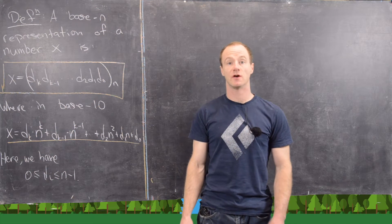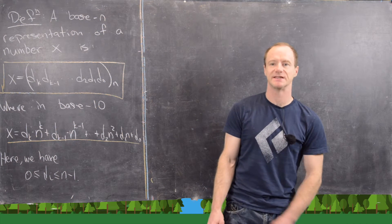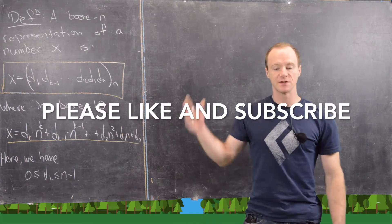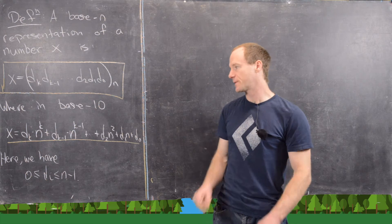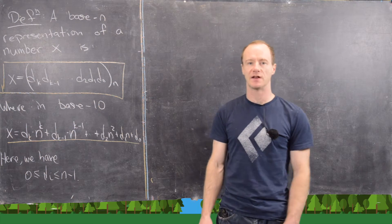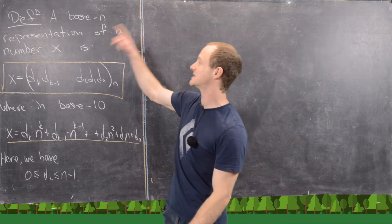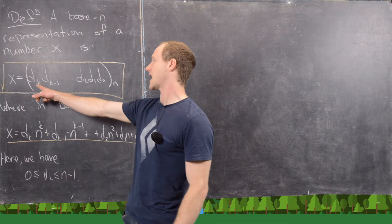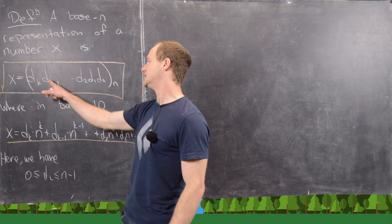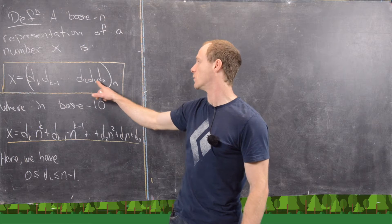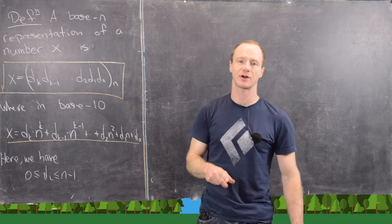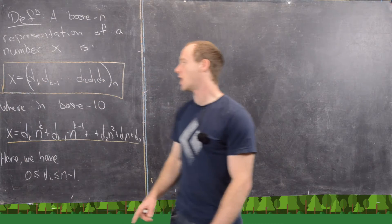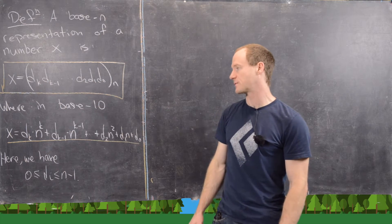In this video, we're going to look at the representation of whole numbers in different bases. You can actually do this with non-whole numbers as well, but we're just going to do it with whole numbers. So let's look at the precise definition, which is a little bit tricky to deal with, but we'll look at a ton of examples that'll make it clearer. A base-n representation of a number x is a way of writing x as d_k, d_{k-1}, all the way down to d_2, d_1, d_0, with a subscript n. That means the base-n representation, and these numbers are the digits of this base-n representation.